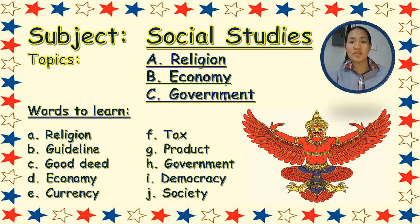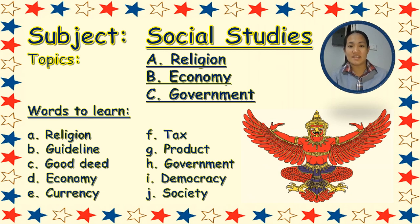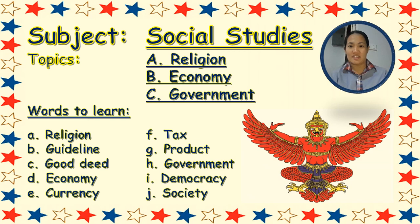So you can repeat after me for your reading skills. Letter A, religion. Letter B, guideline. Letter C, good deed. Letter D, economy. Letter E, currency. Letter F, tax. Letter G, product. Letter H, government. Letter I, democracy. And Letter J, society.